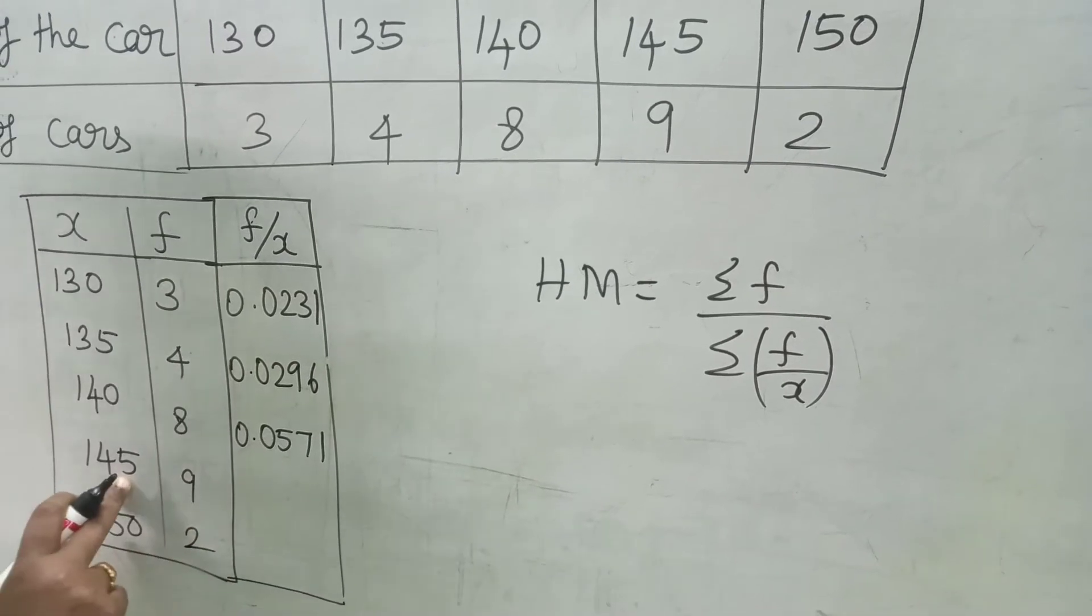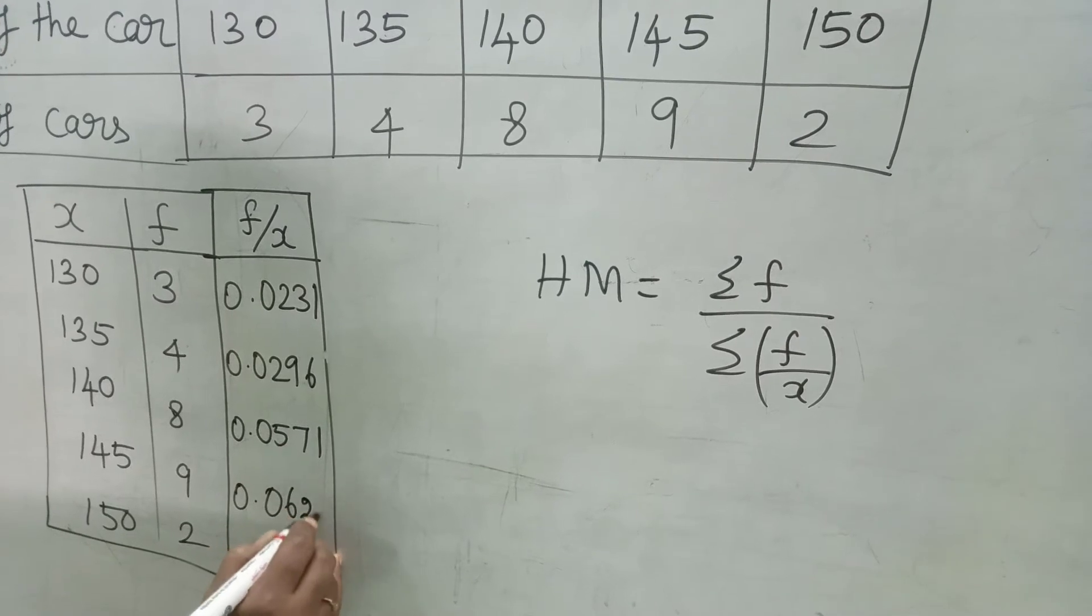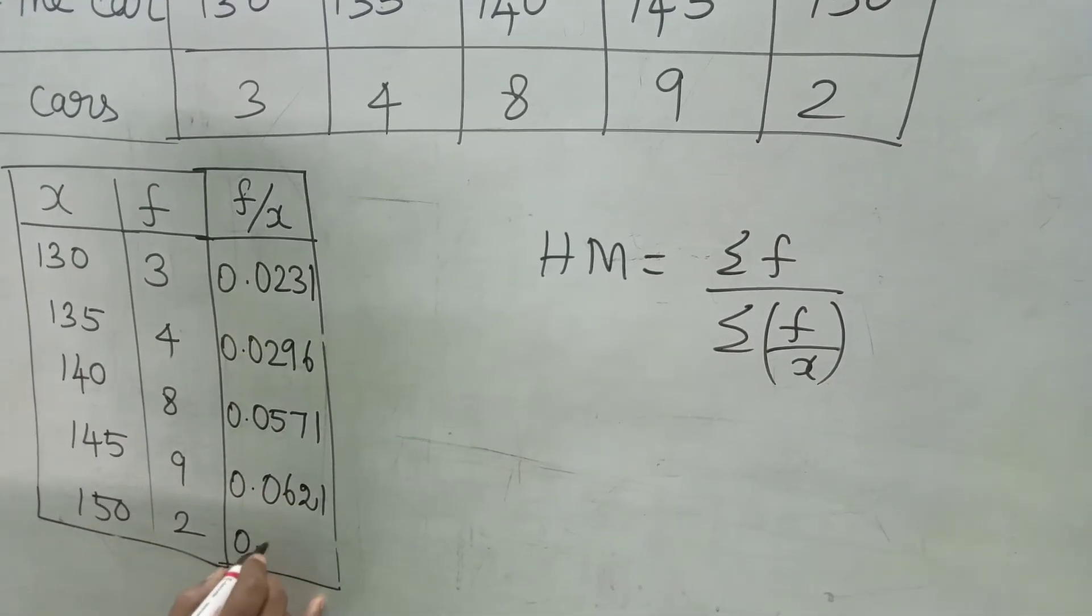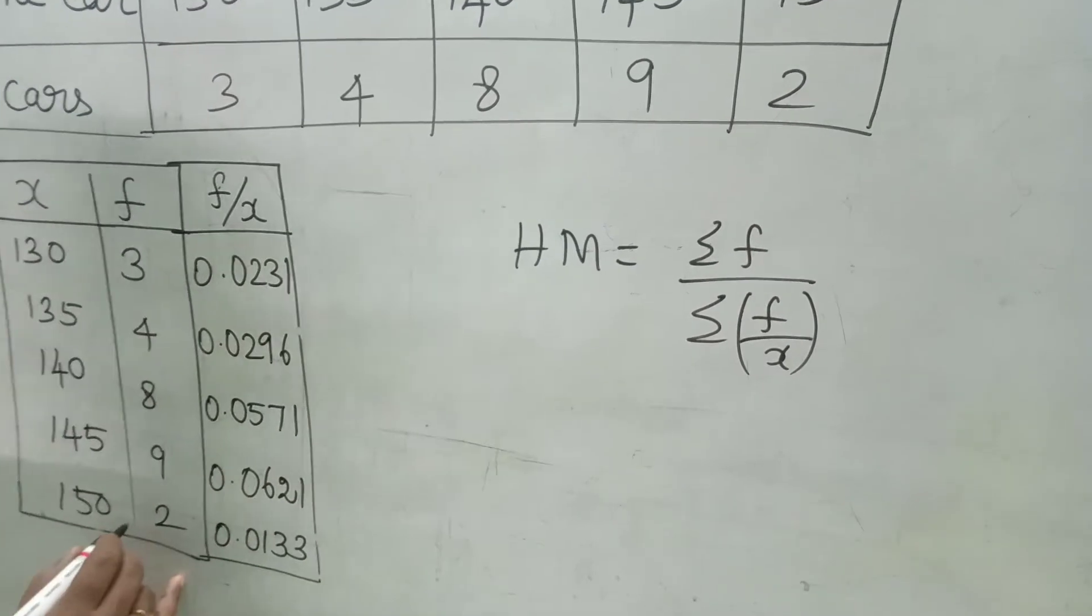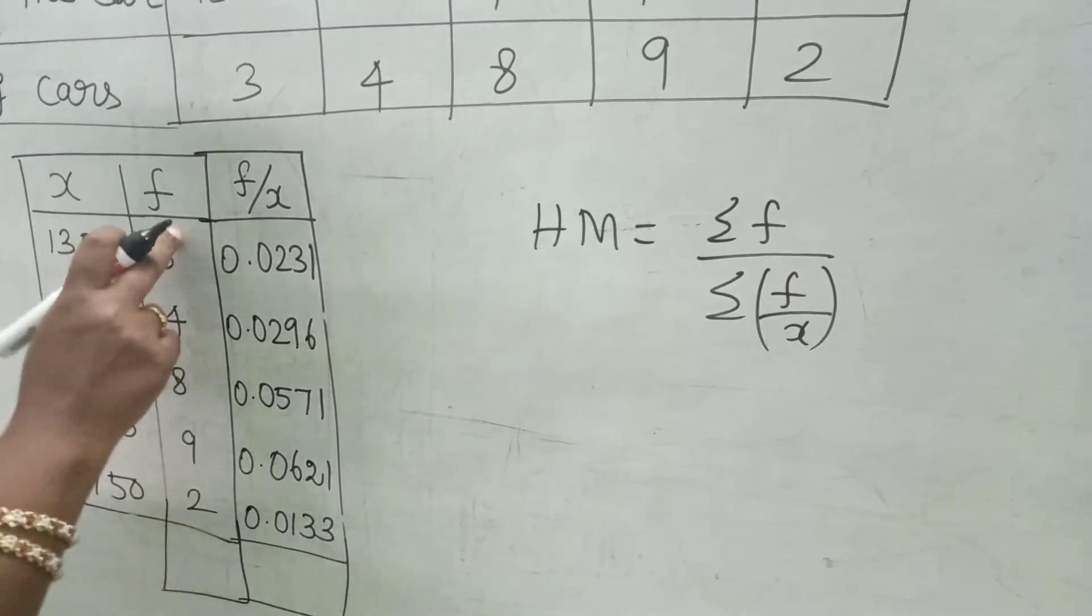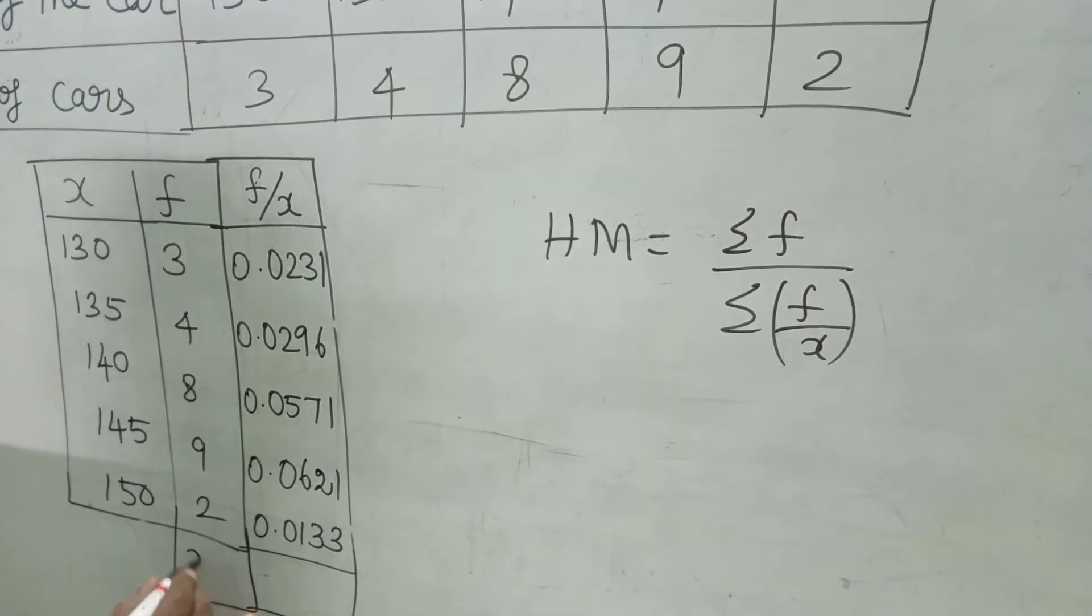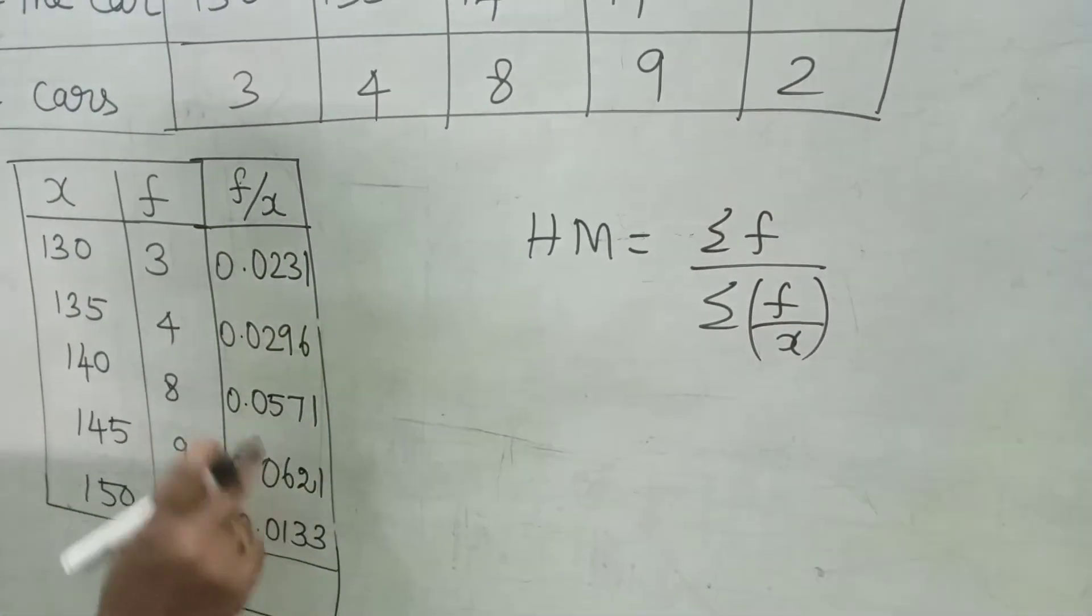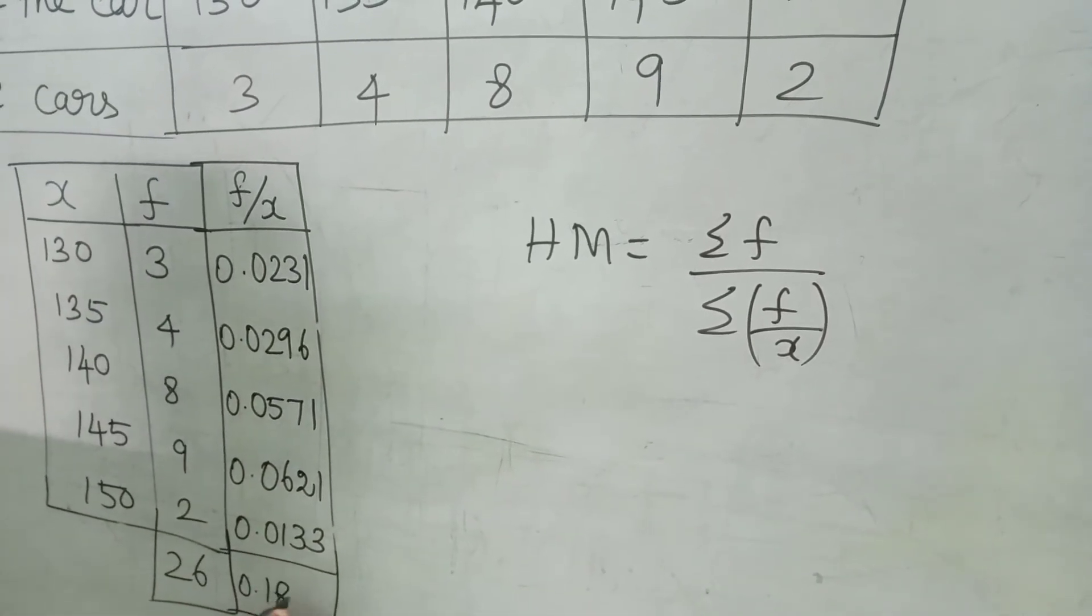9 divided by 145 is 0.0621. 2 divided by 150. That is 0.0133. We need sigma F column. Adding the second column, sigma F value is 3 plus 4 plus 8 plus 9 plus 2. That is 26. We need sigma F by X. Adding the decimal values, you will get 0.1852.